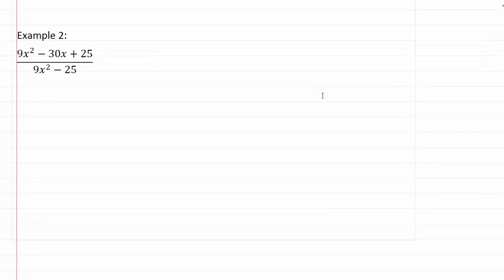Now let's go ahead and take a look at example two. So in example two I've got 9x squared minus 30x plus 25, which looks to me like I've got perfect square right here, perfect square right here.